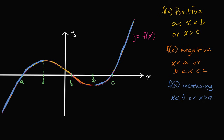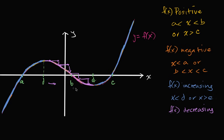And where is f of x decreasing? It's going to be right between d and e — between x equals d and x equals e — but not exactly at those points, because at both of those points you're neither increasing nor decreasing. As you increase x in this region, your y has decreased, all the way until this point over here. So f of x is decreasing for x between d and e.